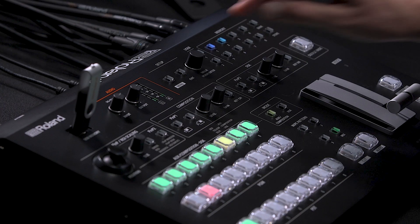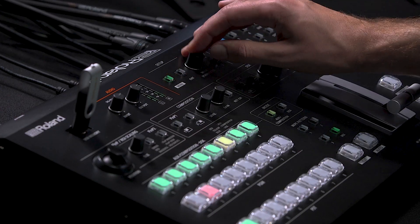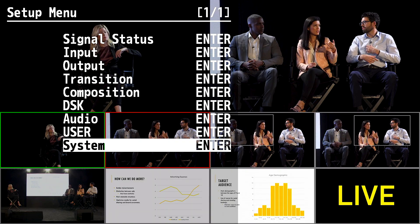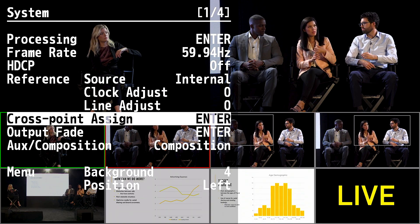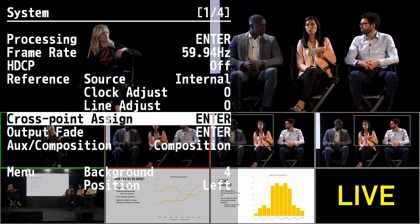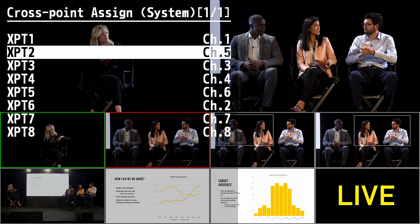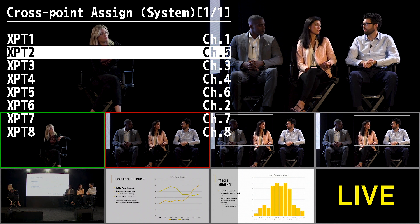To set up video cross points, press the menu button, go into System, followed by Cross Point Assign. Here you can see cross point two swapped with input five.